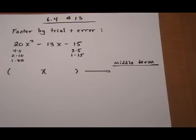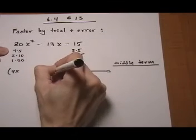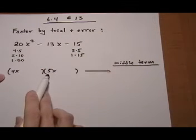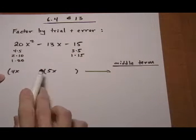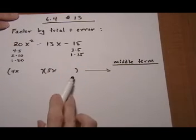So I'm just going to start with the 4 times 5, so 4x and 5x. I know that I've got 20x² for the beginning, and now I need to put in factors of 15 on the last pieces so that my last term is going to be minus 15 when it multiplies out.